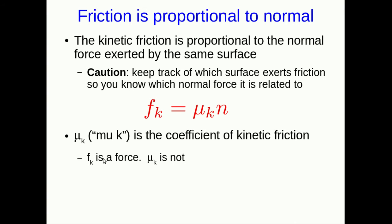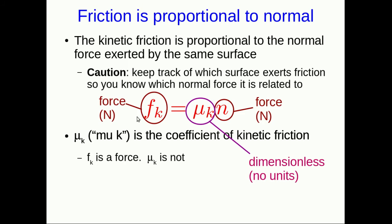This symbol μ_k stands for this coefficient. Note, it's not a force. F_k, the friction, is a force. μ_k is not a force. It's a coefficient. If you do a dimensional analysis, the friction is a force, the normal is a force, and that tells you that this coefficient is dimensionless. It has no units. So don't mix it up with a force. It's a thing you use to calculate a force, and it's a property of the two surfaces that are sliding against each other.